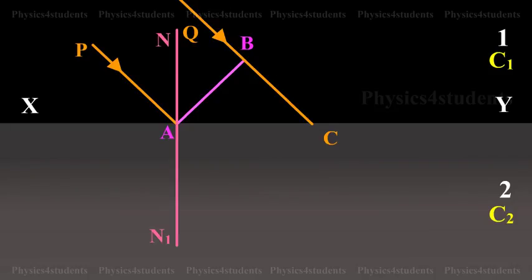NN1 is the normal drawn to the surface. The wavefront and the surface are perpendicular to the plane of the paper.